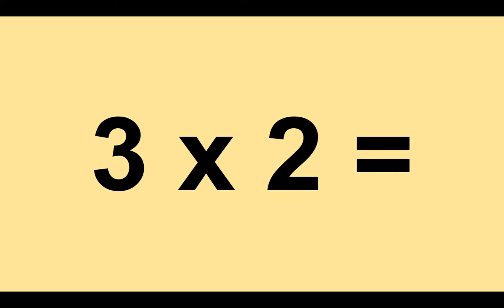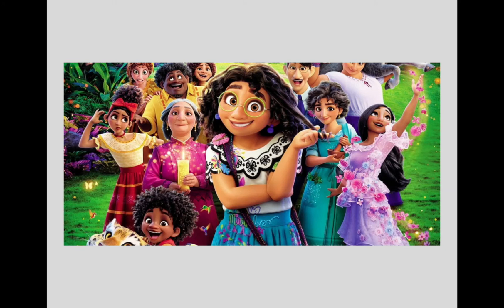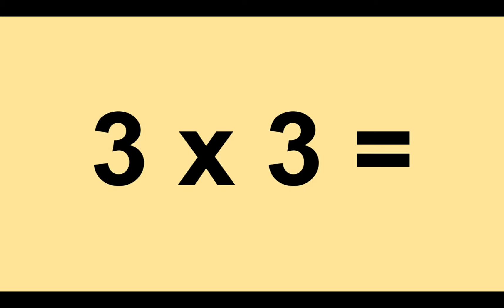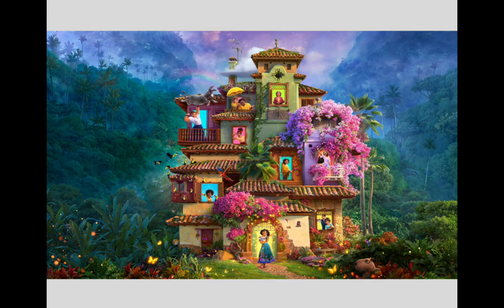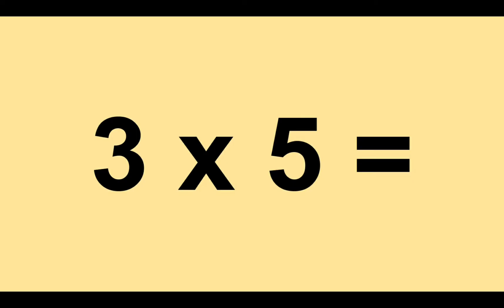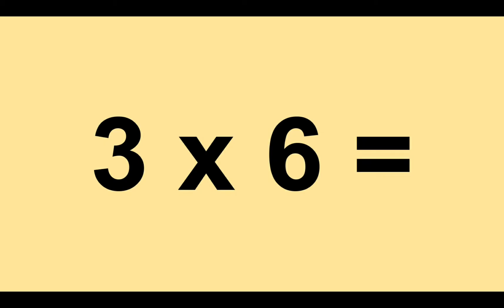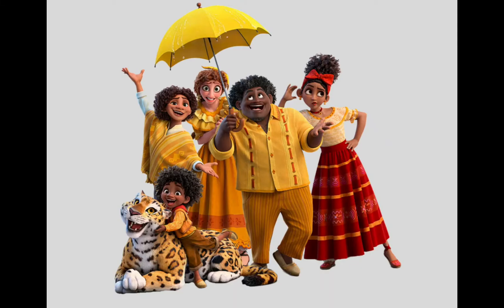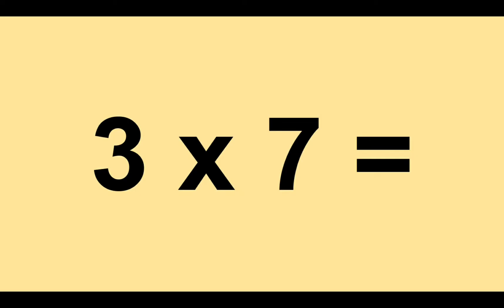Three times two equals six. Three times three equals nine. Three times four equals twelve. Three times five equals fifteen. Three times six equals eighteen. Three times seven equals twenty-one.